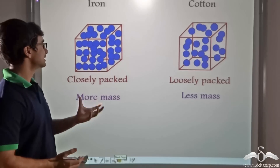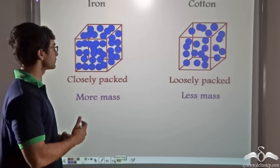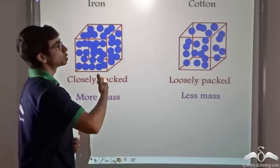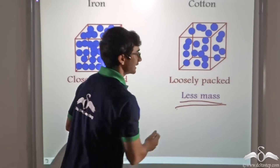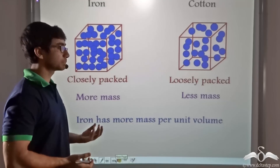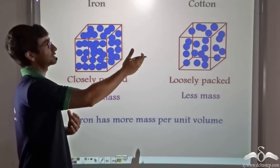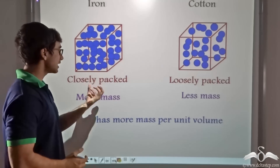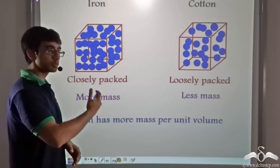So we can say that since the molecules in iron are closely packed, they have more mass, because more number of molecules are present in unit volume as compared to that of cotton, where the molecules are loosely packed and that is why it has less mass. Thus we can say that iron has more mass per unit volume. Since we have considered unit volume for both substances — iron as well as cotton — and since the atoms or molecules in iron are more closely packed, iron has more mass per unit volume.